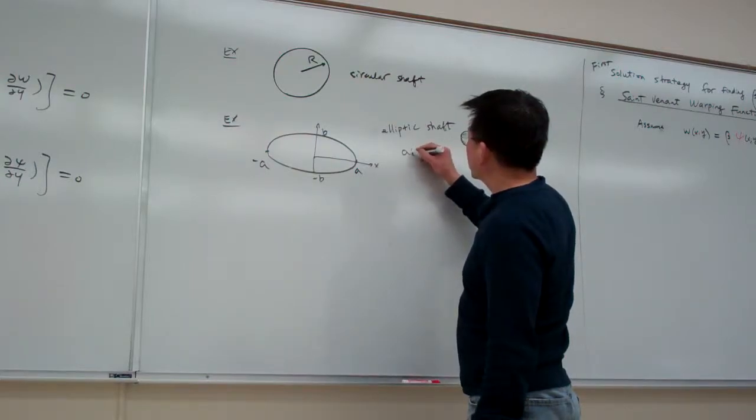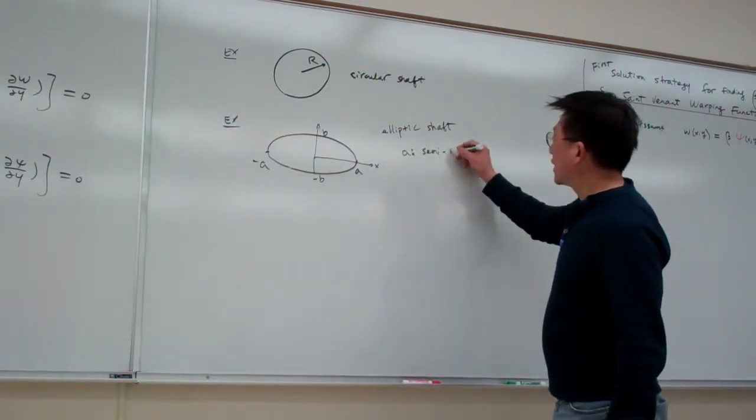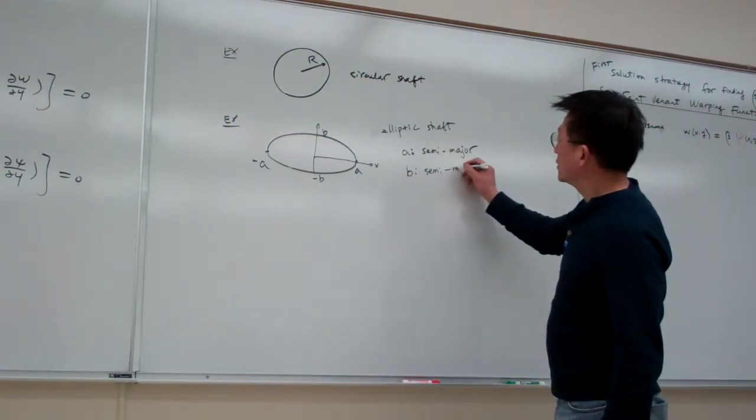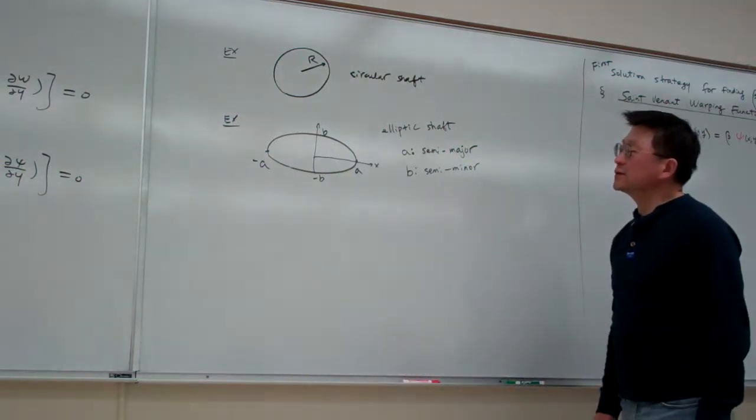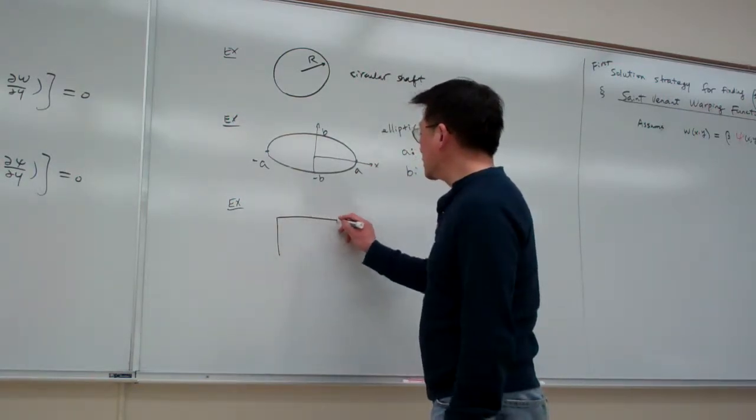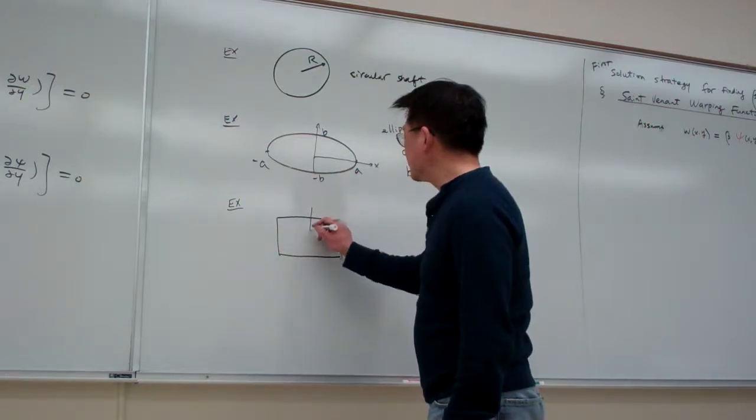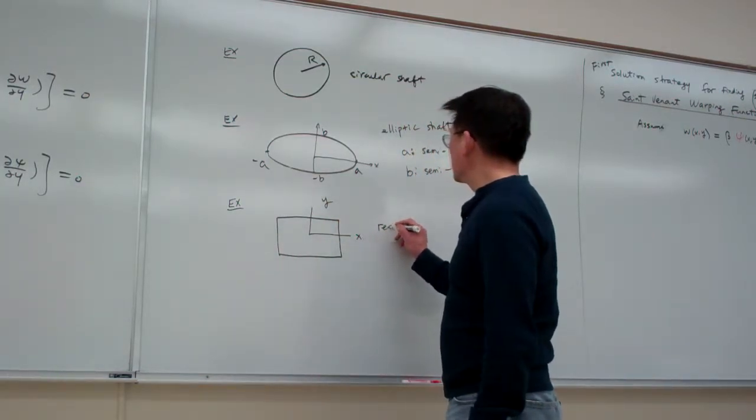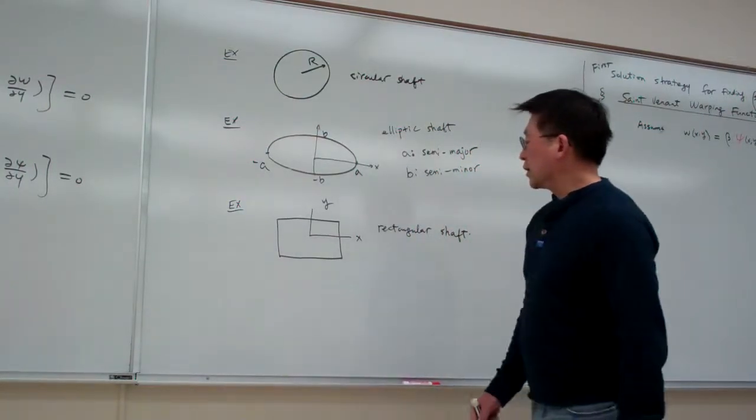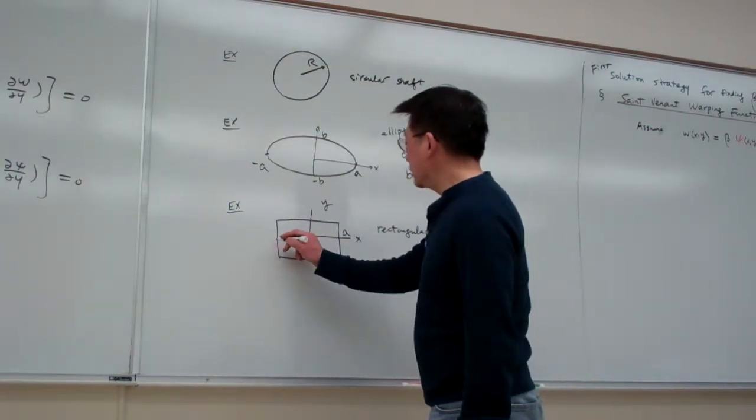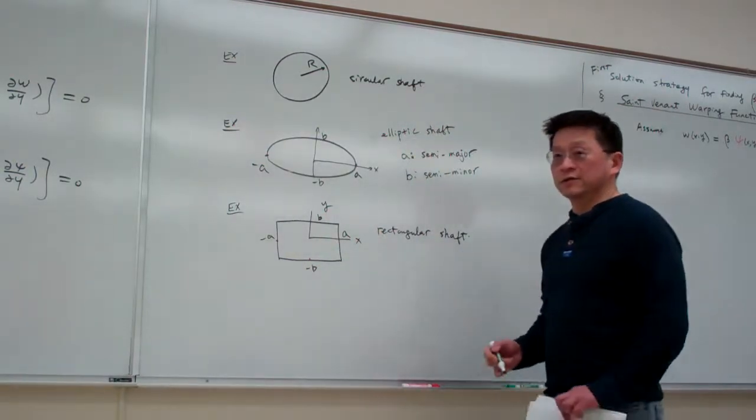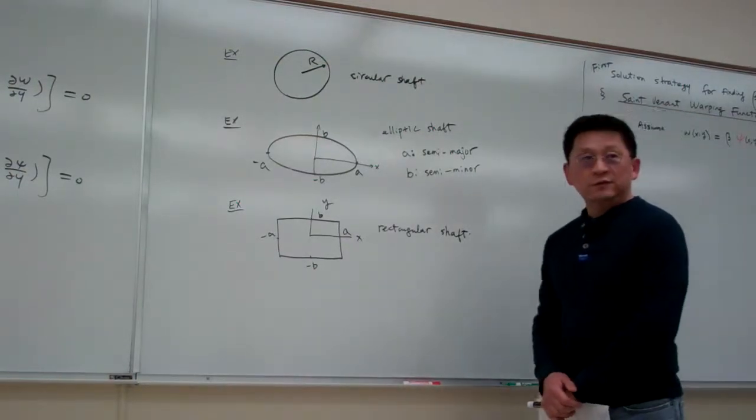And here the a is called the semi major, and b is called the semi minor dimensions. And then another one we're going to look for is rectangular shaft. For a rectangular shaft, again, this is from between minus a to a, and between minus b to b. Here that is the dimension of the things.